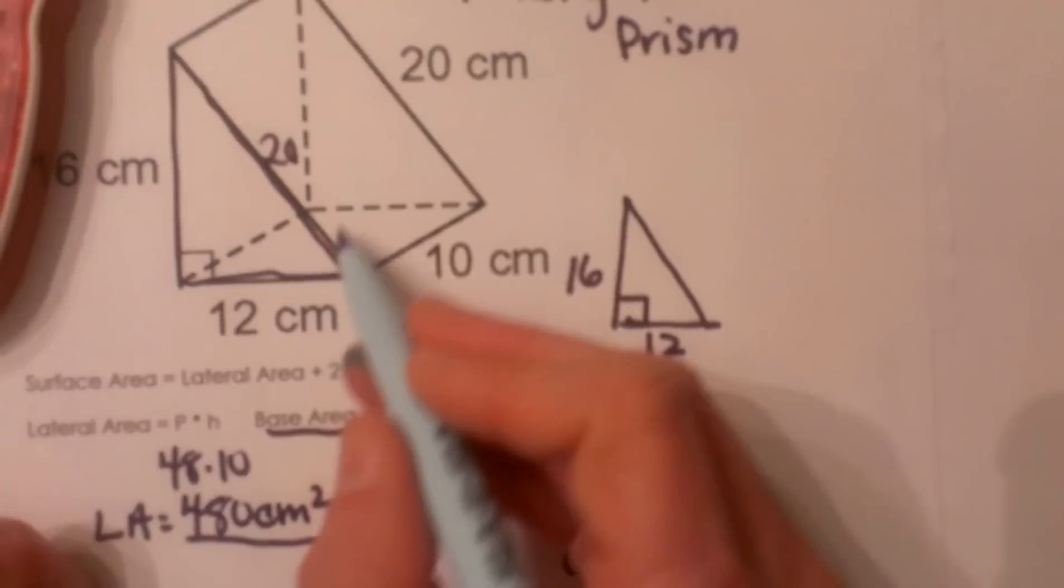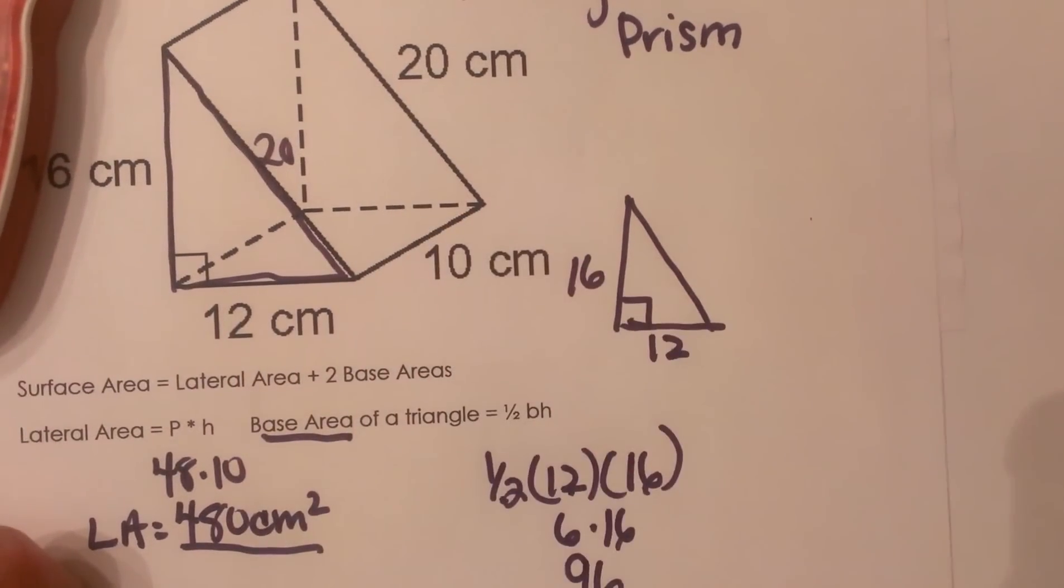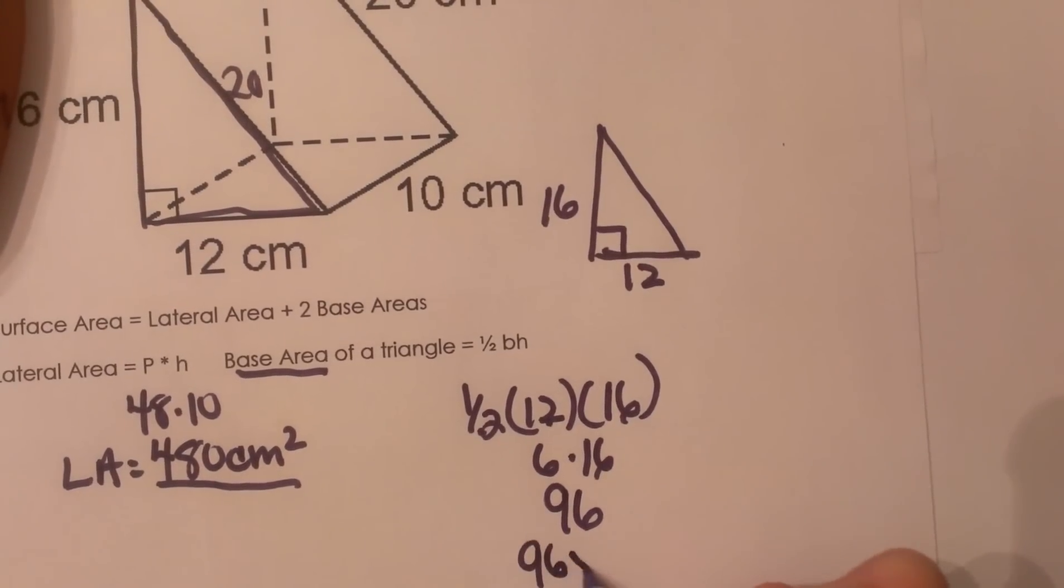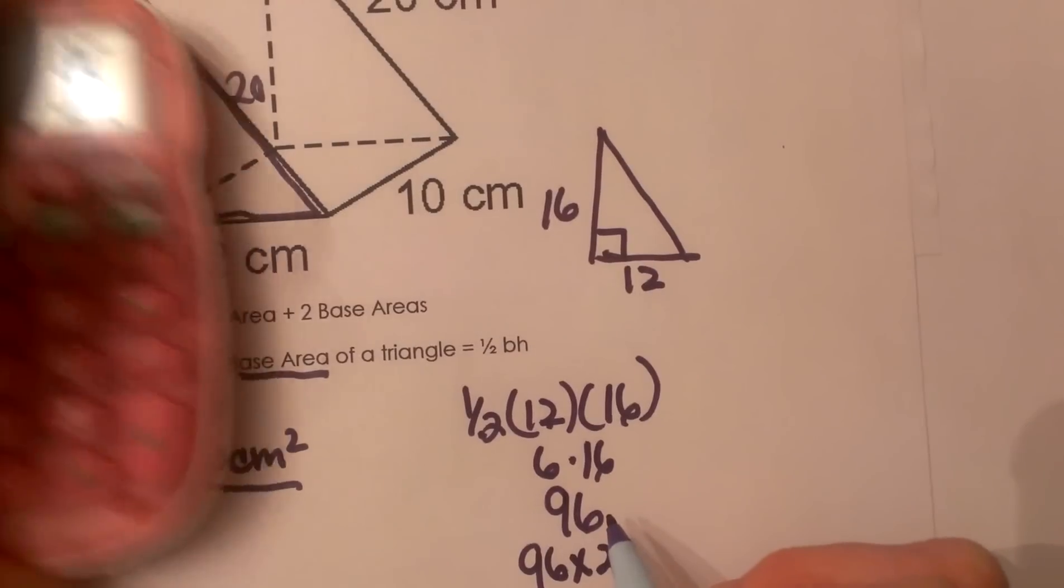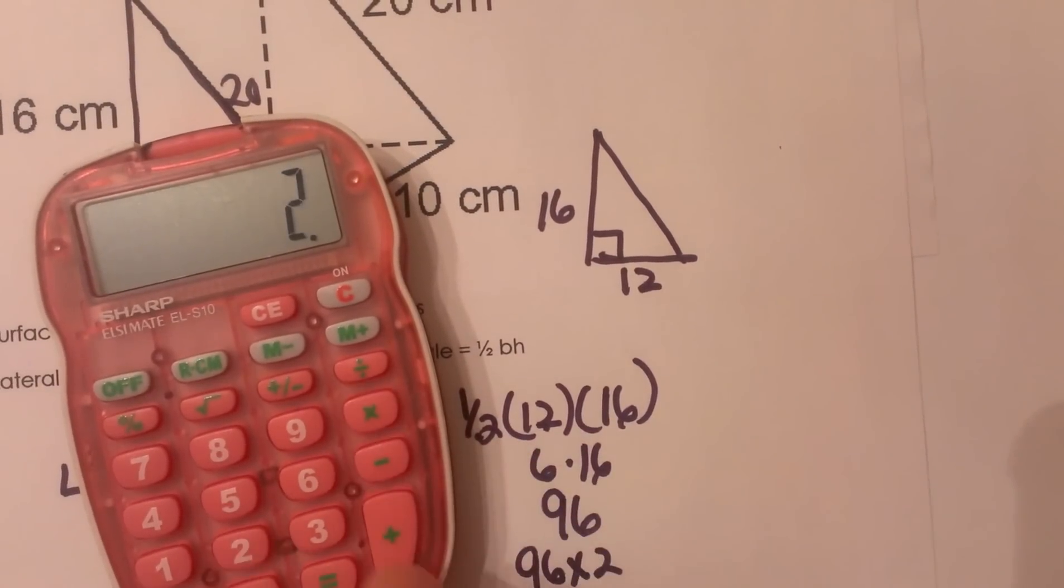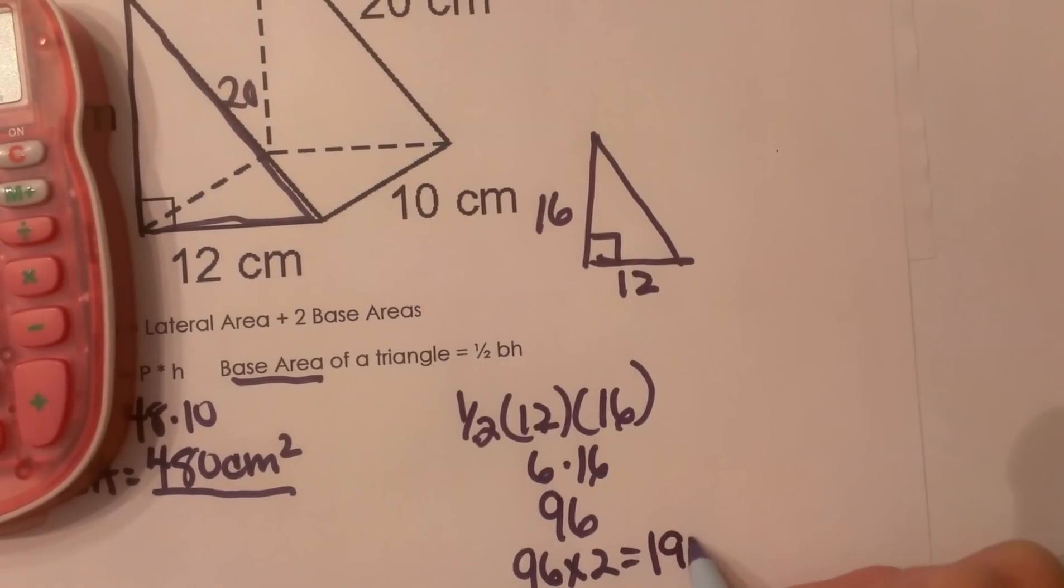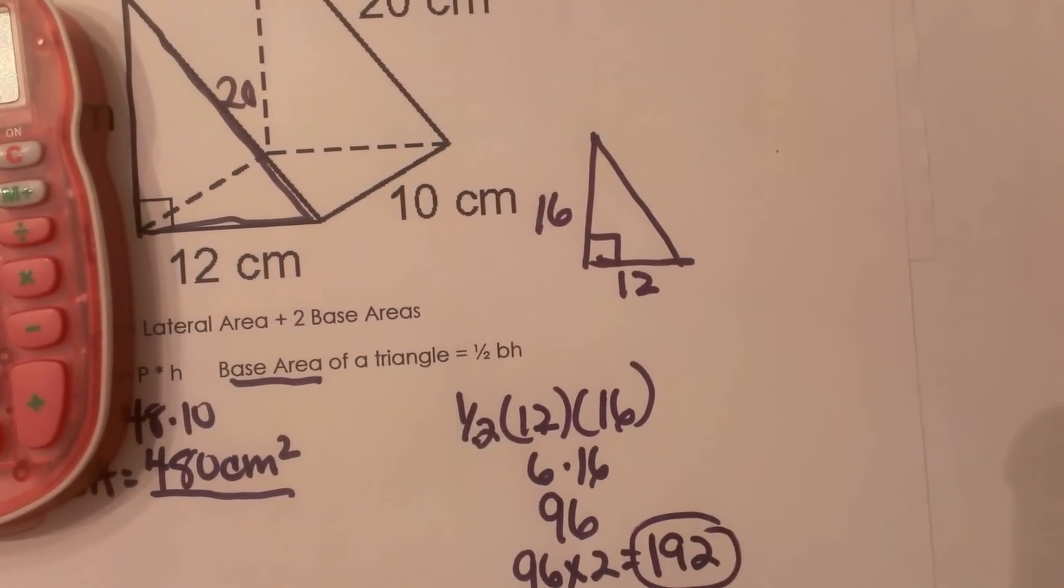So one base area is 96. That accounts for one of these, but remember I have two of these, so I'm going to have to take that 96 and double it. So let's multiply 96 times 2, and that gives me 192. That accounts for both base areas.